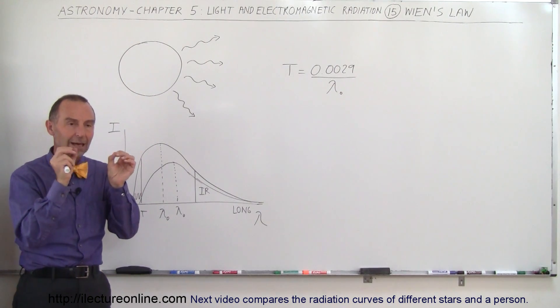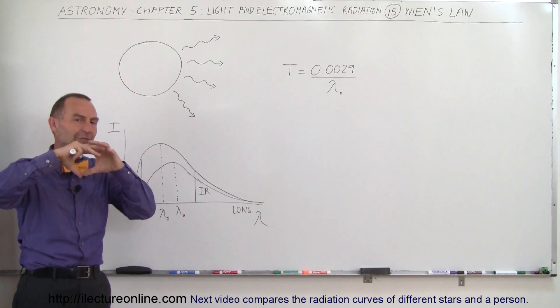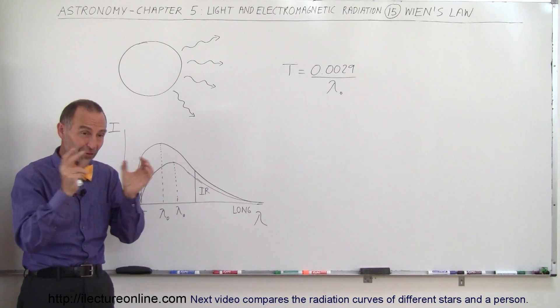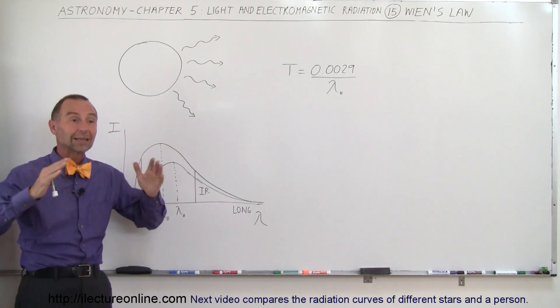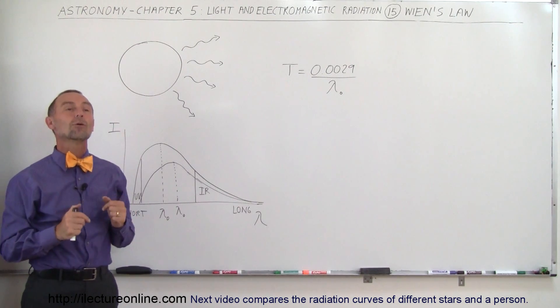An object that has atoms vibrate, these atoms have electric fields around them, and when those electric fields vibrate back and forth with the atoms they cause electromagnetic radiation to emit.